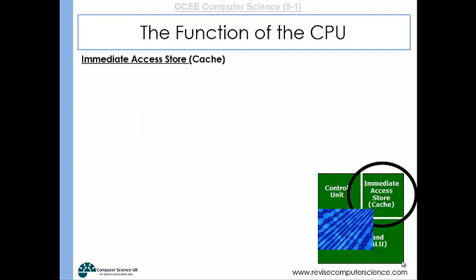Then the immediate access store, the second very important aspect of the CPU. So this is basically going to store all of the data that is just about to be processed. So when the RAM delivers data and instructions, they will be stored in that immediate access store ready to be processed at speed.